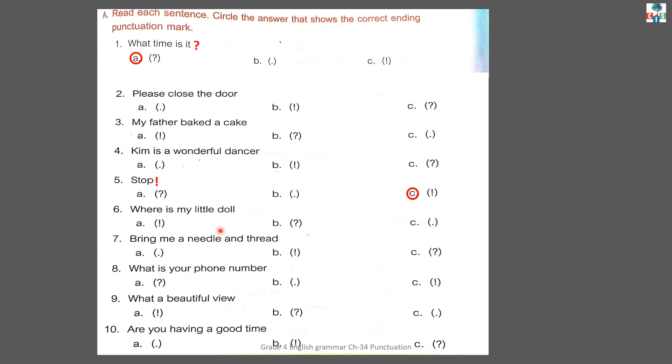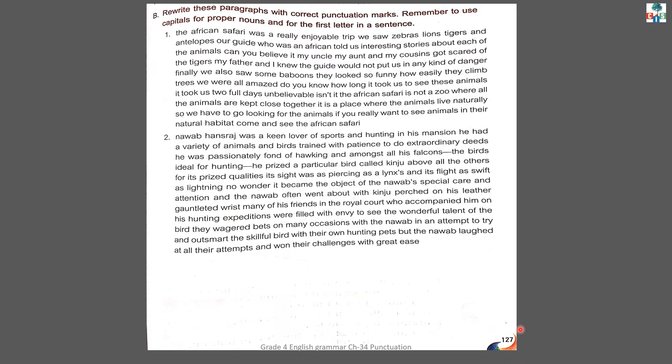Let's move towards exercise B. See page number 127, exercise B. In this exercise, two paragraphs are given and you have to put correct punctuation marks. Remember that whenever we start a sentence, we use a capital letter, and for proper nouns — names of places, animals or things — the first letter is always capital. Today we will be doing paragraph 1.